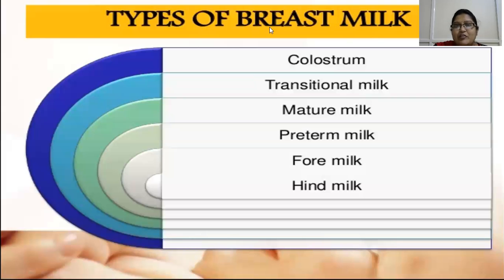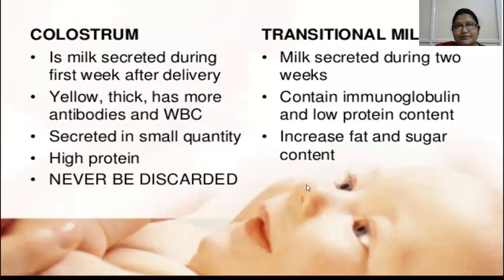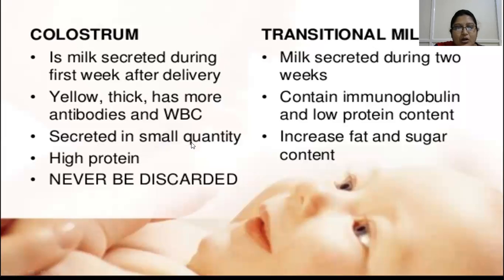The types of breast milk differ between term and preterm and according to the phase of lactation. These are colostrum, transitional milk, mature milk, preterm milk, foremilk, and hindmilk. Colostrum is the milk secreted during the first two to three days of delivery. It is thick, has more antibodies, WBCs, and more vitamins A, D, E, and K. It is secreted in small quantity but constitutes high protein, and it should never be discarded.